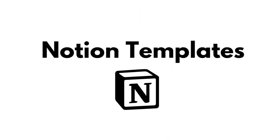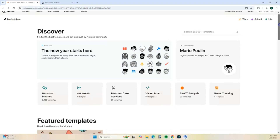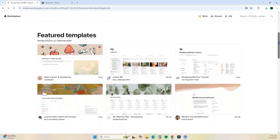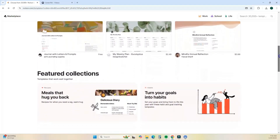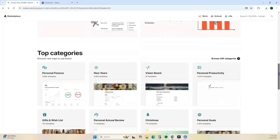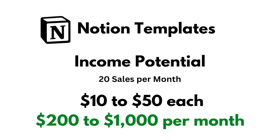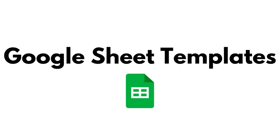First up are Notion templates. These are perfect for people who are looking to organize their lives or their businesses. You can create templates for things like project tracking, budgeting, social media content calendars, vision boards, and goal tracking. I've seen the price range of Notion templates anywhere between $10 to $50 per template, giving you a monthly income between $200 to $1,000 per month.